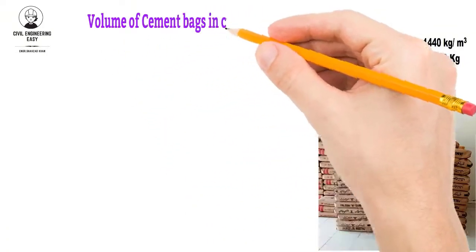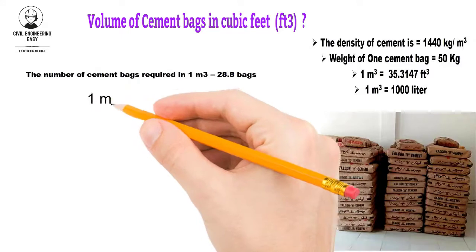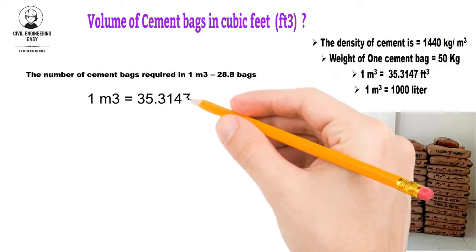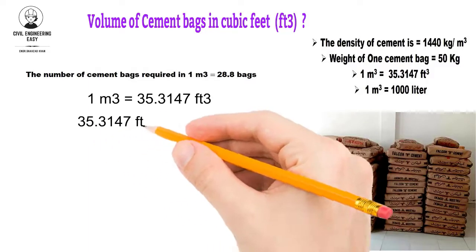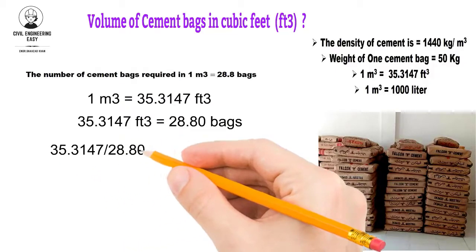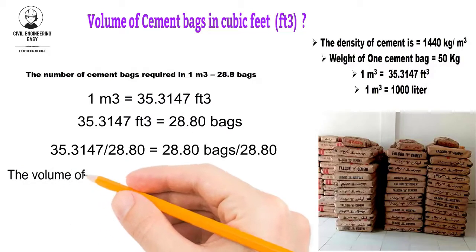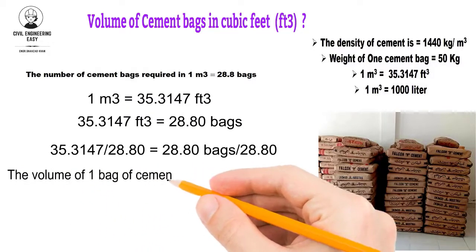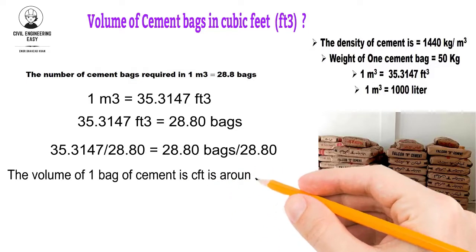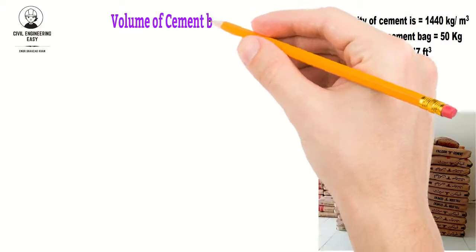Now let's discuss the volume of one cement bag in cubic feet. We have derived that 28.80 bags are required in one cubic meter, and we know that one cubic meter equals 35.3147 cubic feet. Therefore, 35.3147 cubic feet equals 28.80 bags. Dividing both sides by 28.80, we get that one bag of cement equals 1.226 cubic feet. So the volume of one bag of cement in cubic feet is approximately 1.226 ft³.